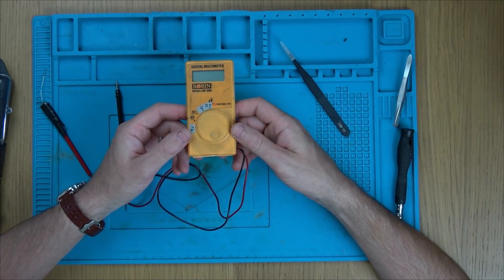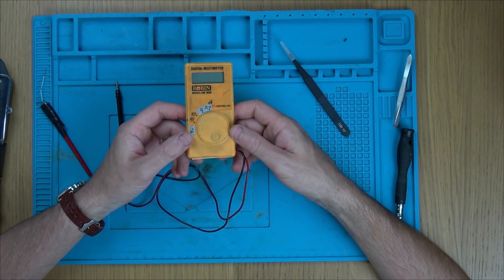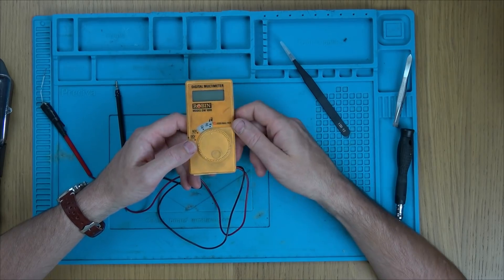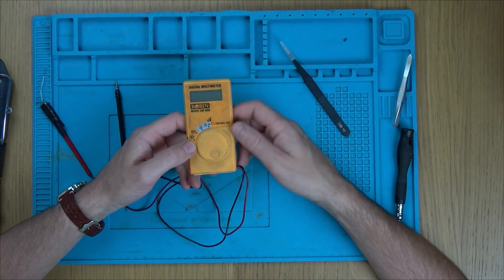Hi there, my name is Vince from My Mate Vince. In this tea break repair, I'm going to be trying to fix up this digital multimeter. Robin is actually a good brand, don't know if they still exist or not.